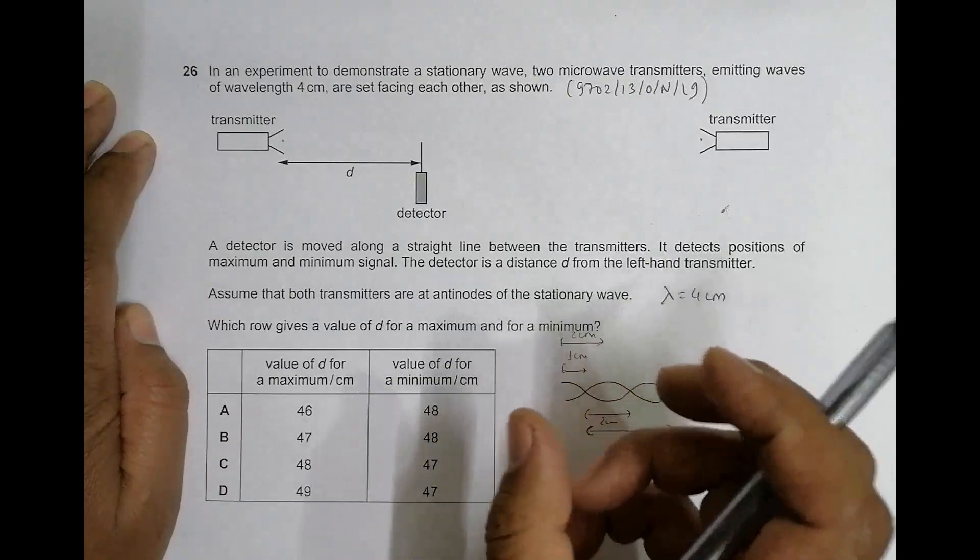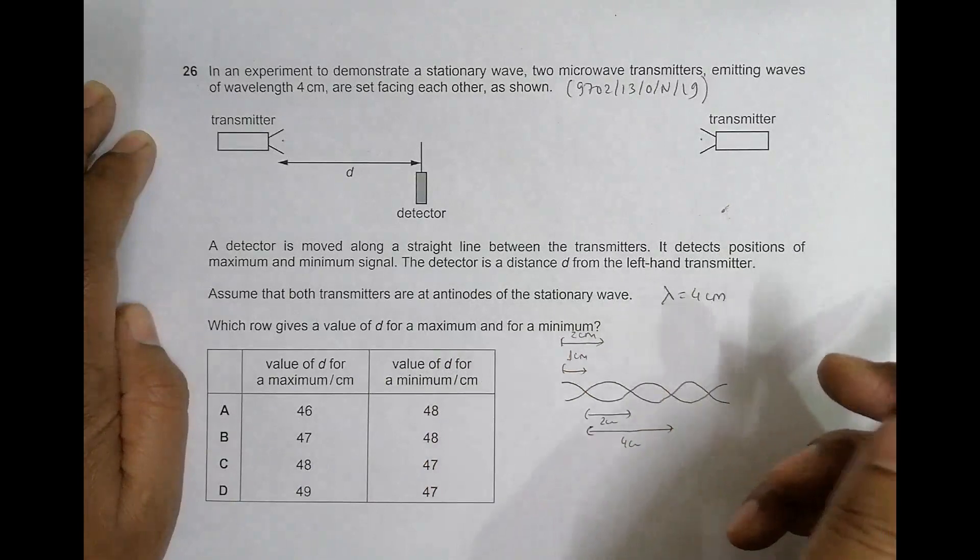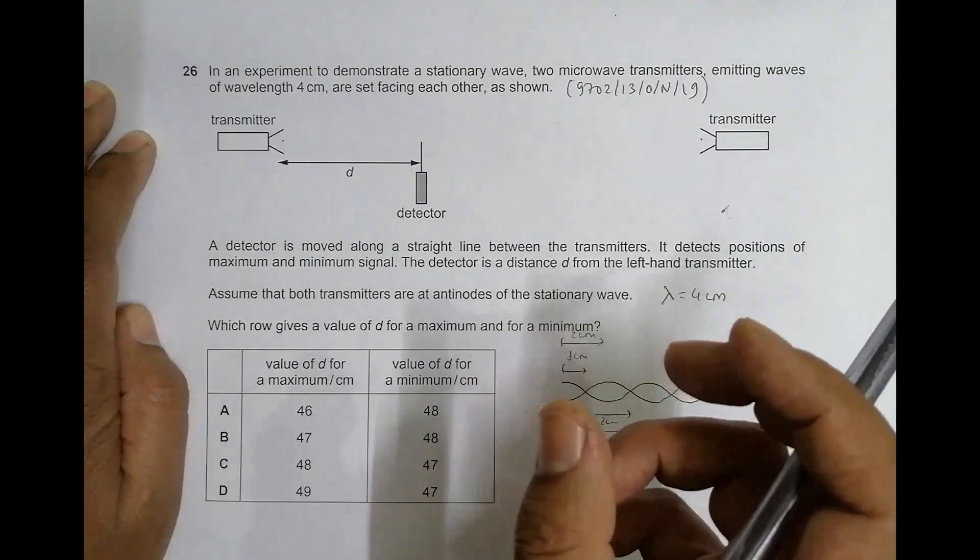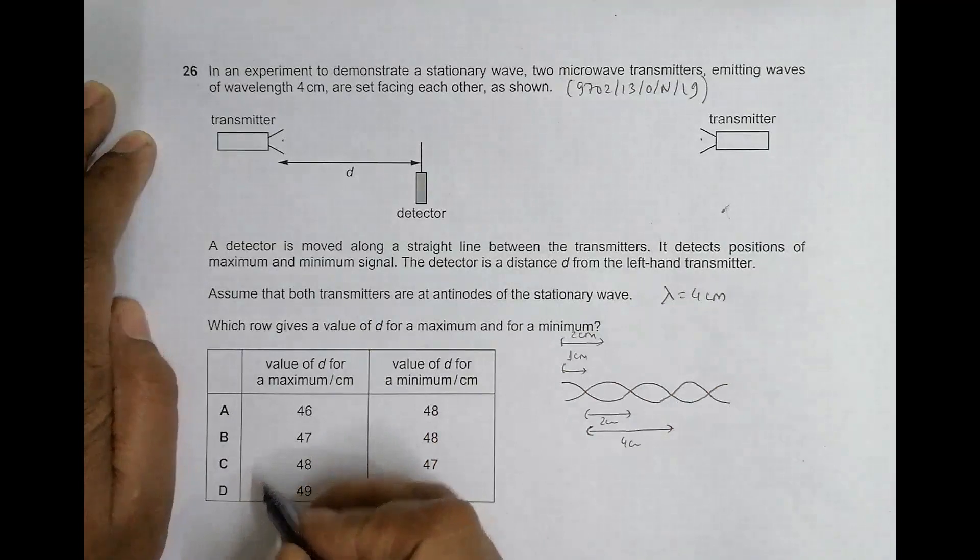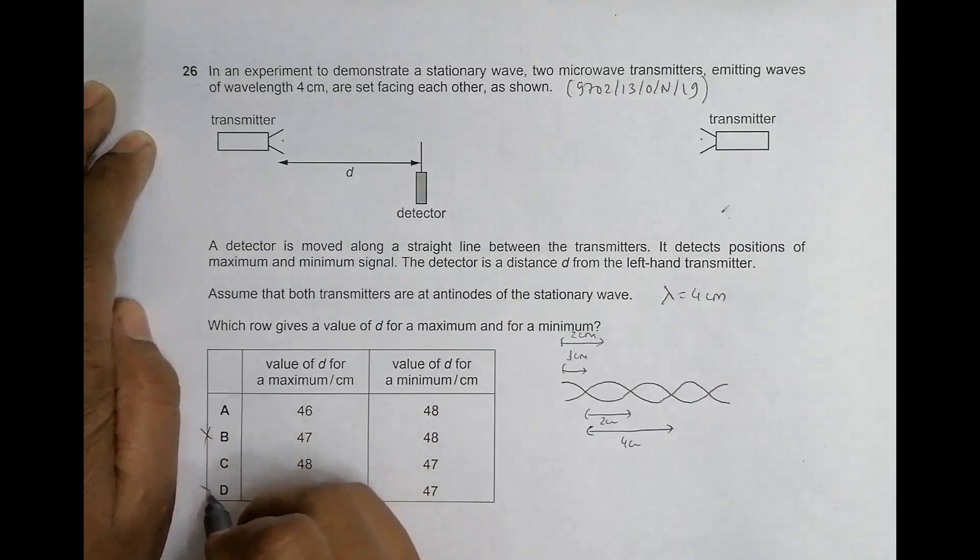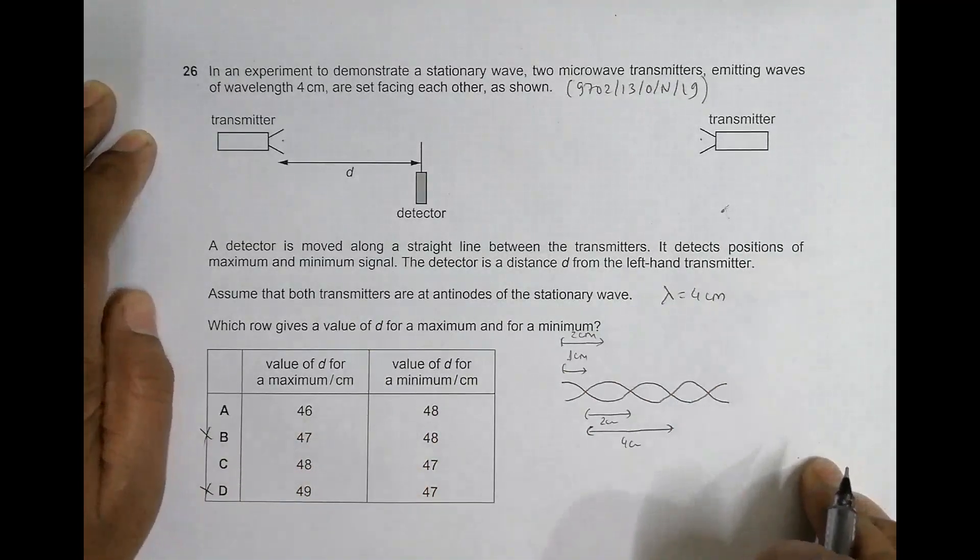At odd numbers no maxima can be formed. That's why choice number B and choice number D disqualify, because they have got maxima at odd centimeters.